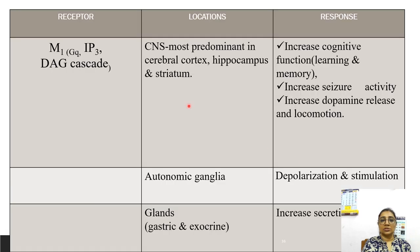M1 receptors act through the inositol triphosphate and diacylglycerol cascade. Location is CNS, autonomic ganglia, and glands. Responses include increased cognitive function due to CNS stimulation, increased seizure activity, increased locomotion, depolarization and stimulation, and increased secretion from glands.